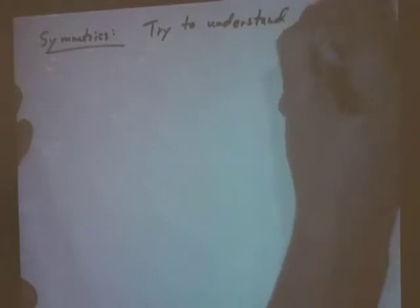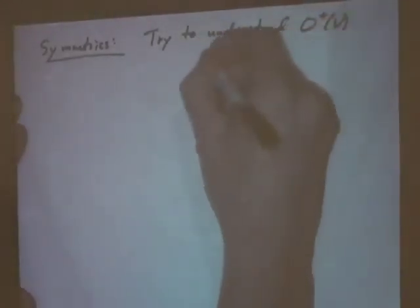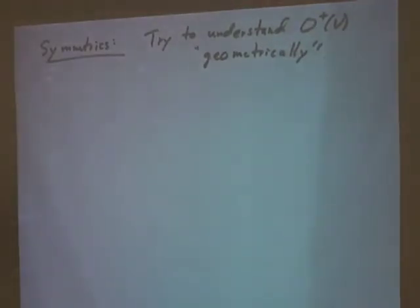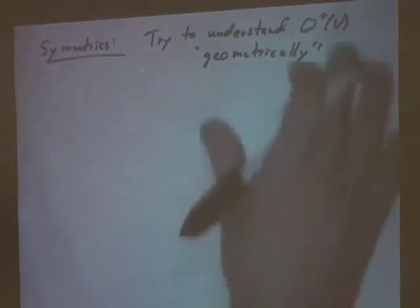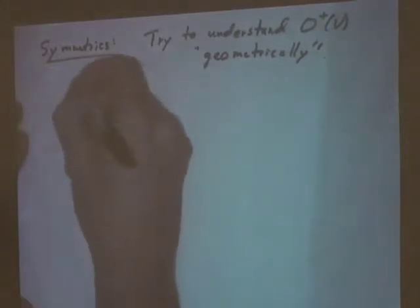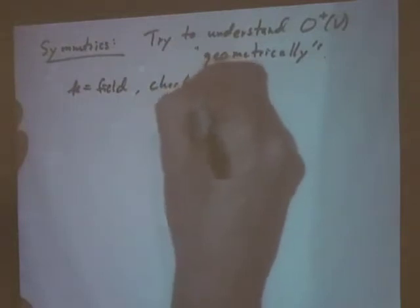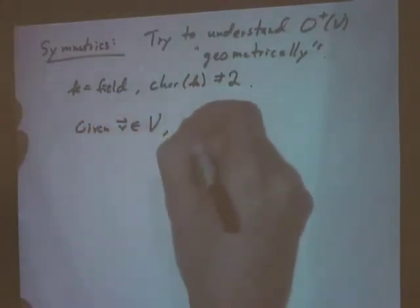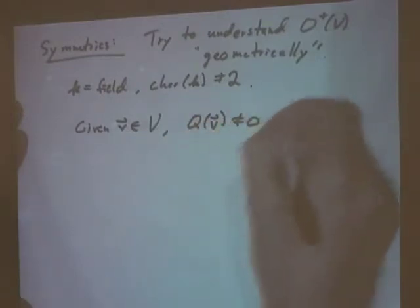Today's lecture focuses on understanding the orthogonal group — or the special orthogonal group — geometrically, meaning in terms of the vectors in the underlying vector space. Here V is taken to be some quadratic space, a vector space over a field K of characteristic not equal to 2. Given some vector v in V where the length of this vector is not equal to zero, we can define a symmetry tau sub v.